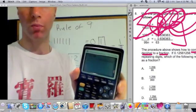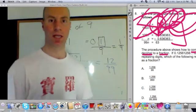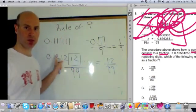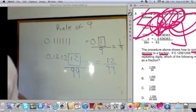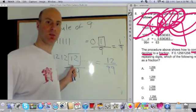Zero point one two, one two, one two. Again, repeating decimal, using the nine rule, found the fraction. So this fraction represents this repeating decimal.